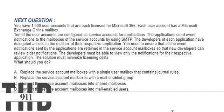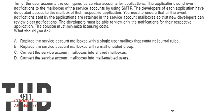Option A: Replace the service account mailboxes with a single user mailbox that contains journal rules. Option B: Replace the service account mailboxes with a mail-enabled group. Option C: Convert the service account mailboxes into shared mailboxes. Option D: Convert the service account mailboxes into mail-enabled users. The correct answer is Option C.